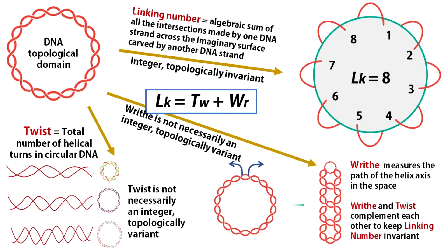Twist represents the total number of helical turns in a topological domain. Twist is topologically variant and is not necessarily an integer. Topologically variant here means you can alter the twist by forcibly separating the two strands. Writhe measures the overall shape of a DNA molecule, such as how the double helix coils upon itself. Writhe is not necessarily an integer and is topologically variant just like twist. Linking number is the sum of writhe and twist for any DNA topological domain. This means writhe and twist complement each other to keep linking number invariant. If twist reduces, writhe increases.